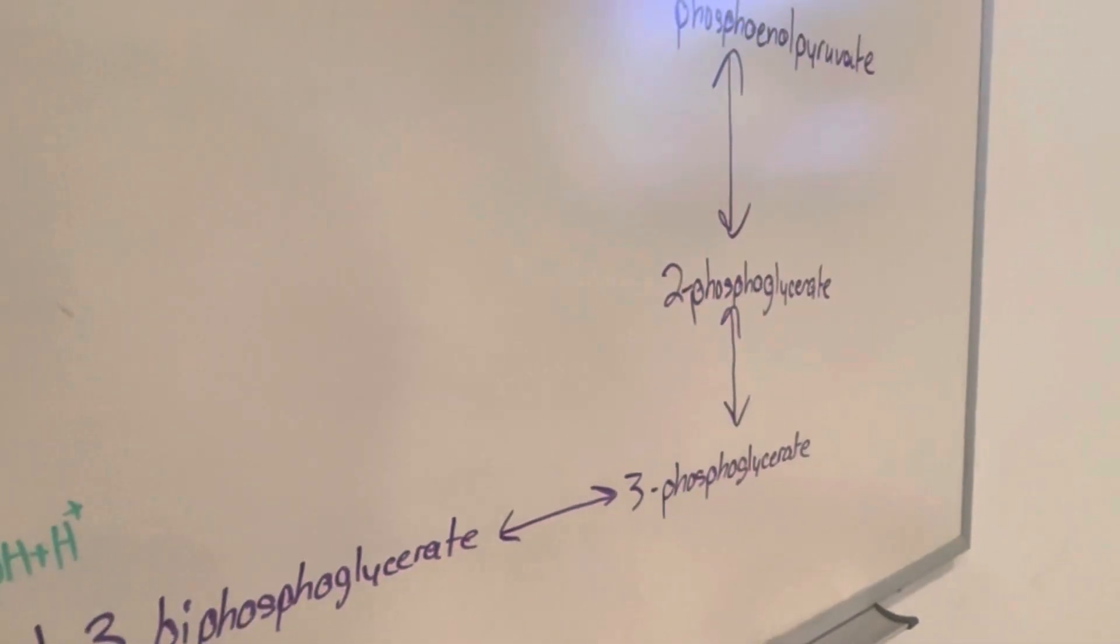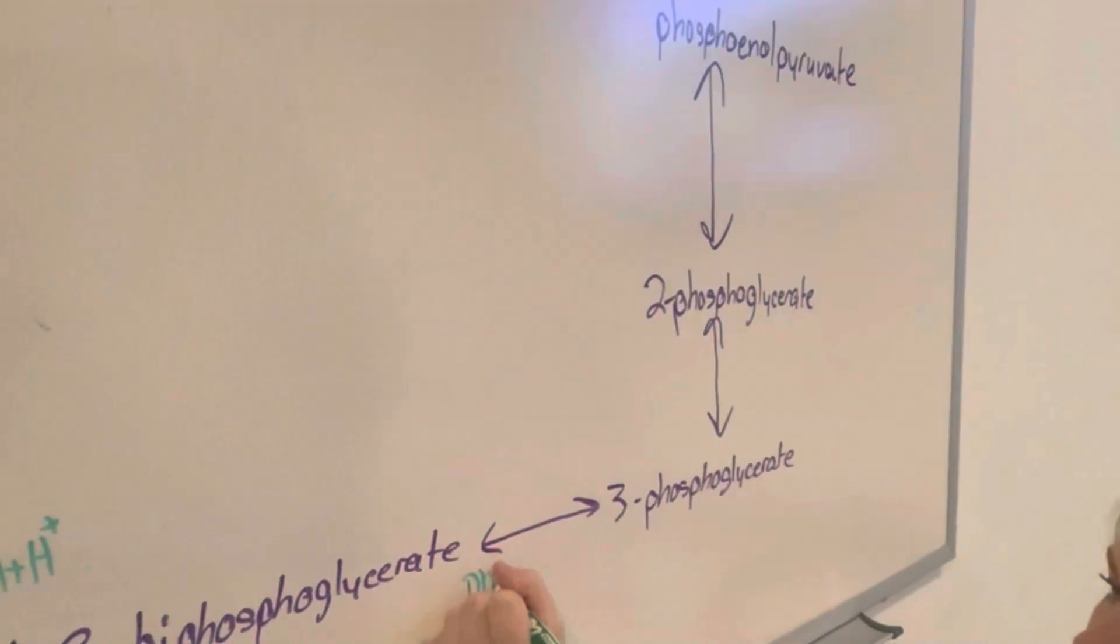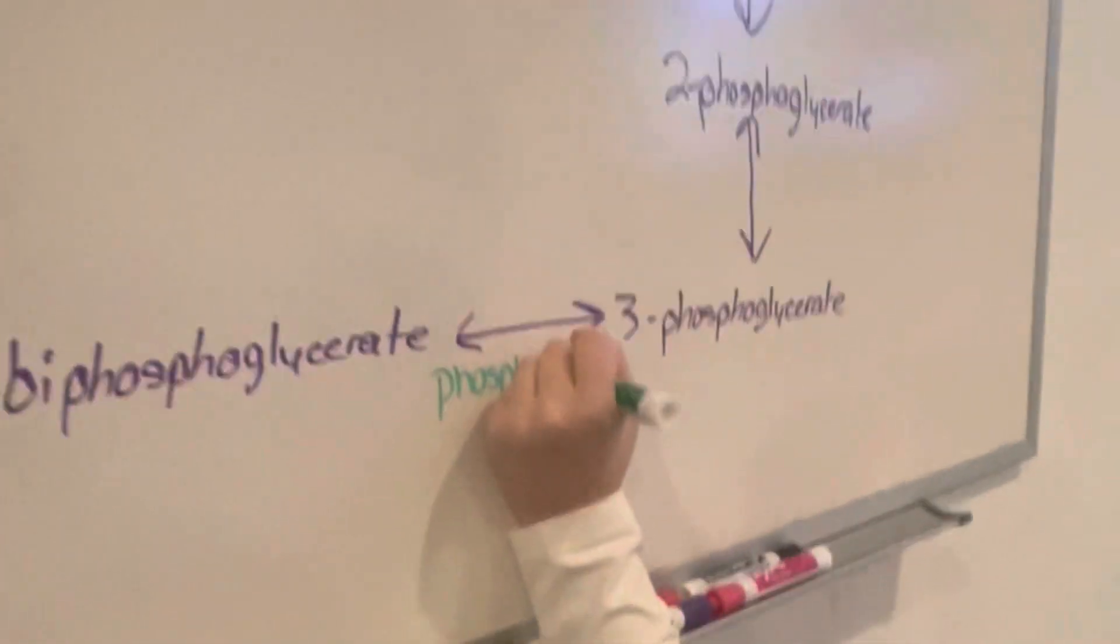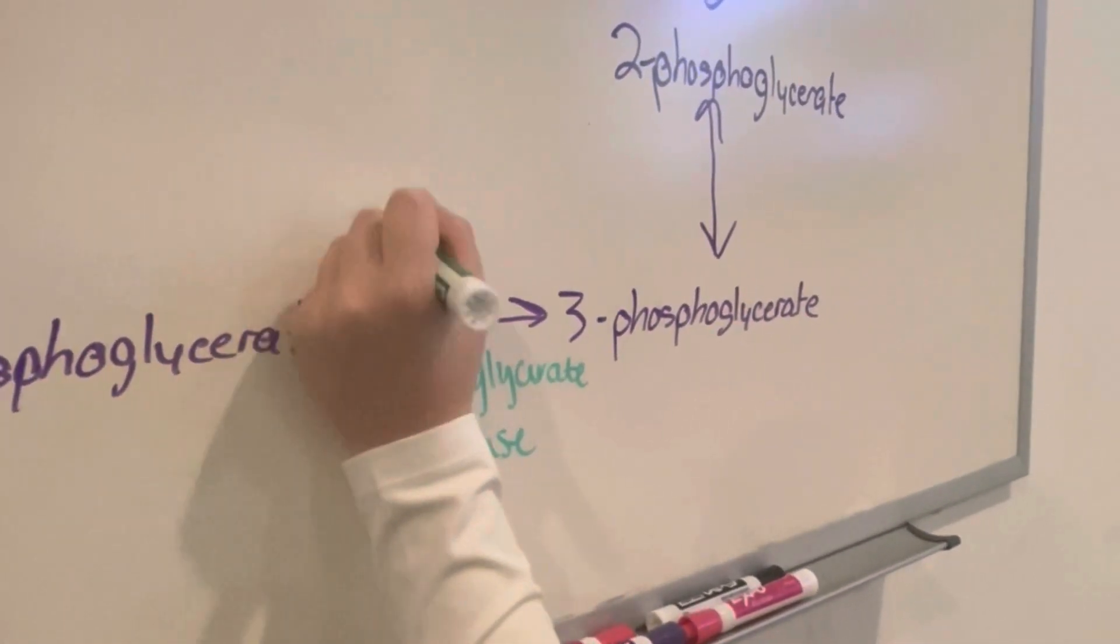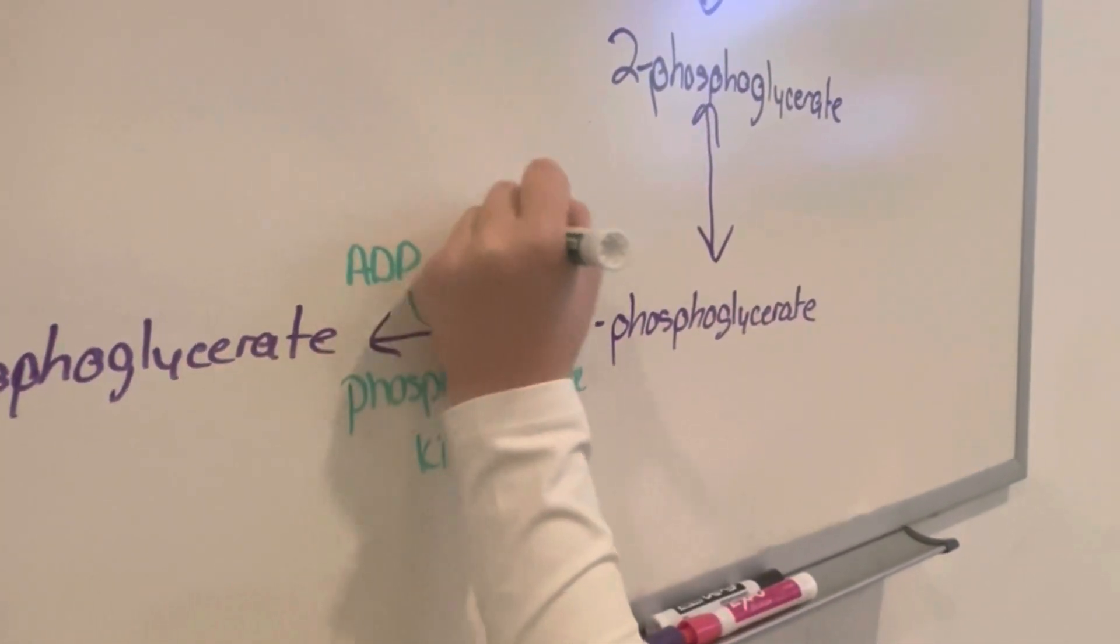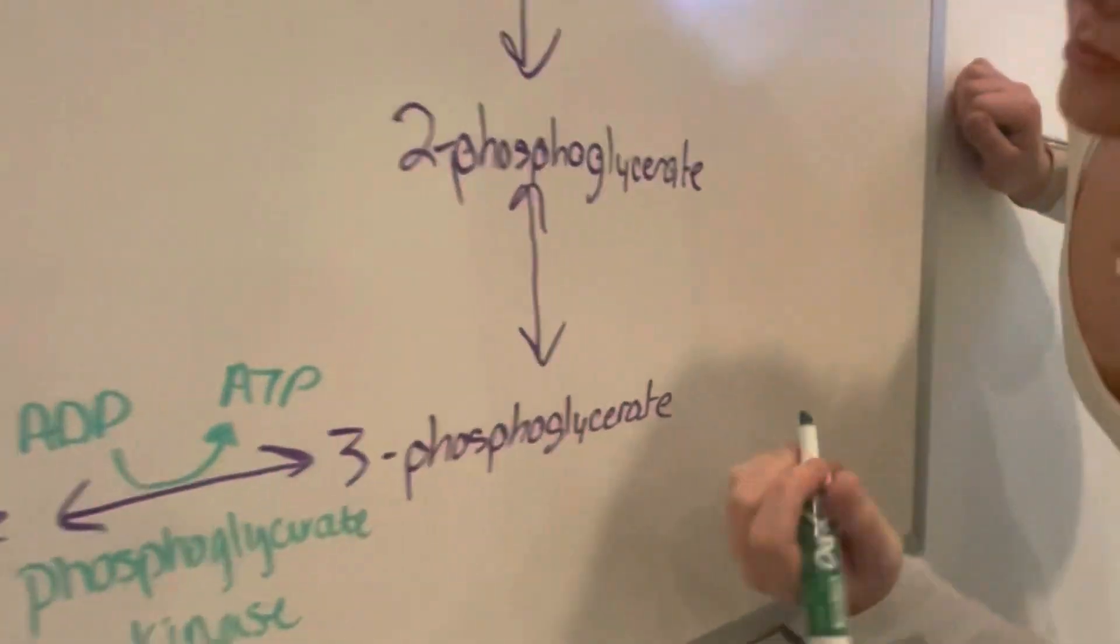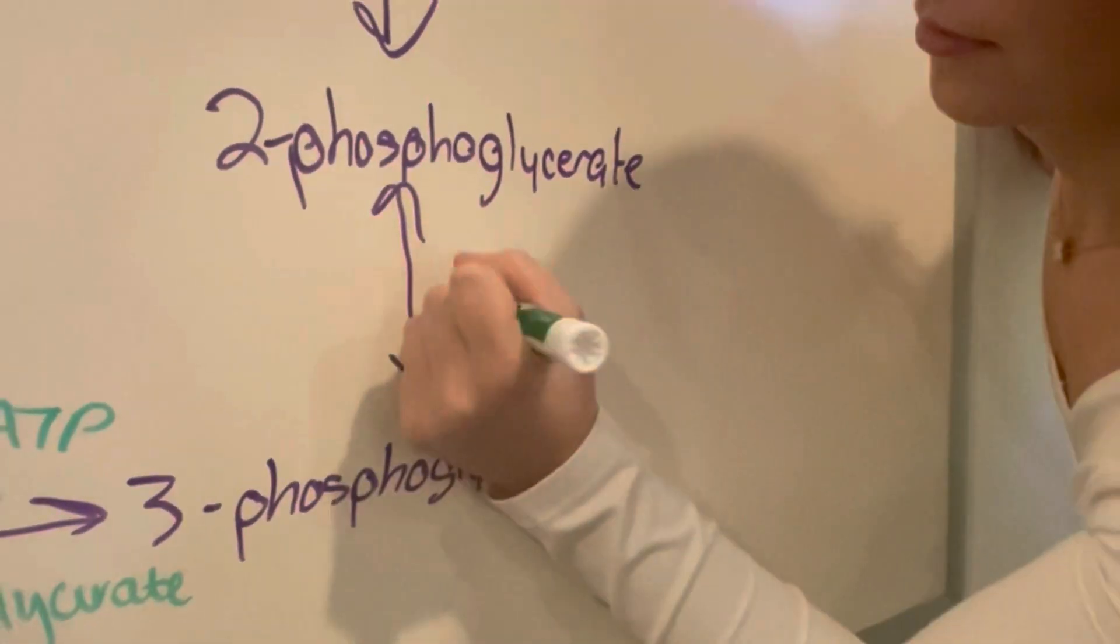This next reaction is then catalyzed by phosphoglycerate kinase and ADP which then produces ATP. The next reaction is then catalyzed by phosphoglycerate mutase.